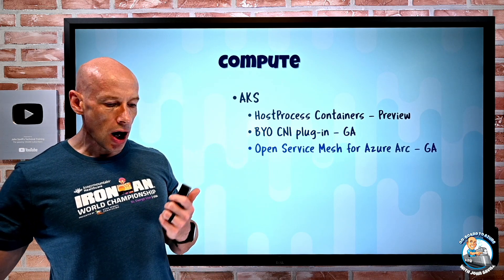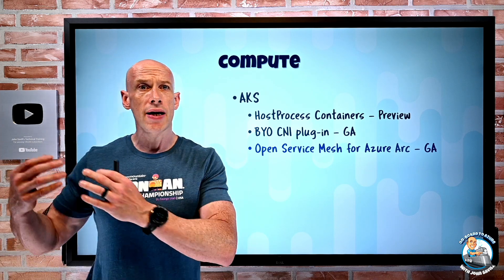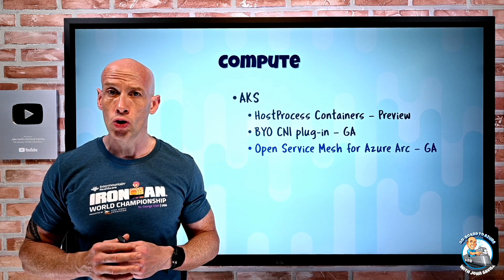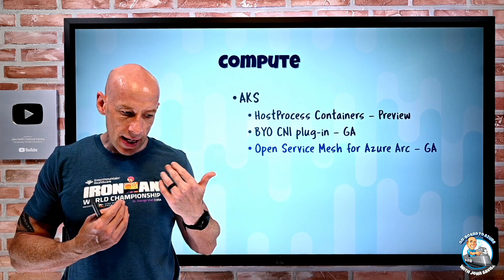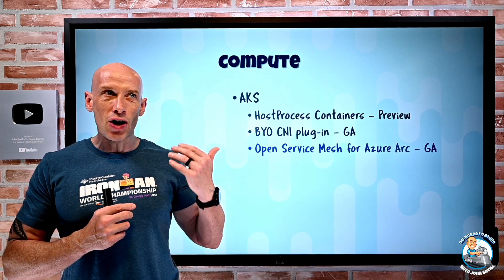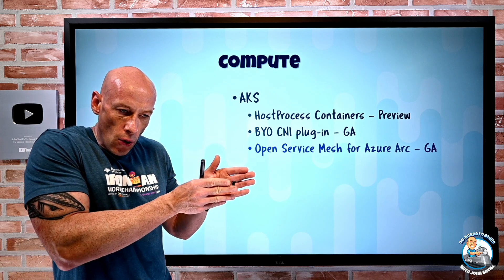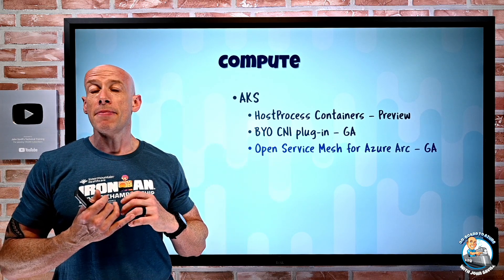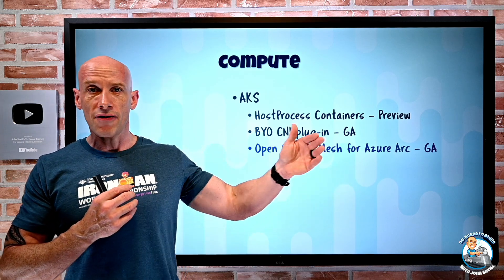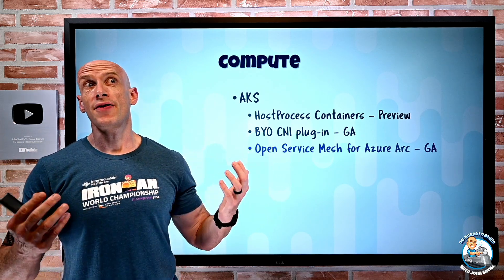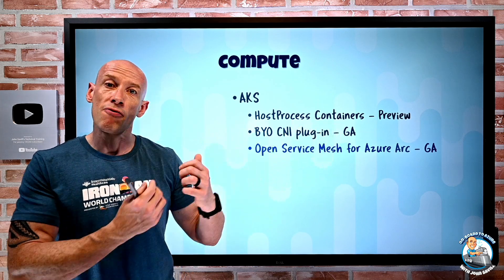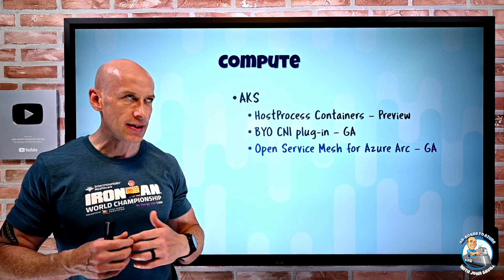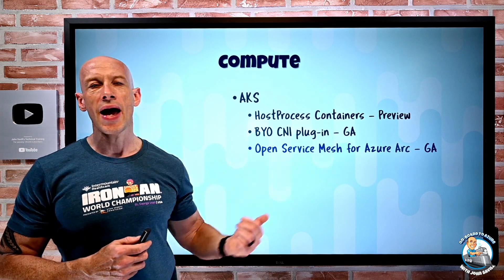Open Service Mesh for Azure Arc has gone GA. Azure Arc for Kubernetes brings Azure control plane capabilities to any CNCF-compatible Kubernetes offering, managed via Azure Arc for Kubernetes. Open Service Mesh is a managed, lightweight, extensible service mesh — it injects an Envoy proxy sidecar to each application instance. With that sidecar, we get capabilities like mTLS encryption between microservices, traffic splitting for canary and blue-green deployment patterns, fine-grained access policies, observability, and much more. That's now GA for Azure Arc managed Kubernetes.